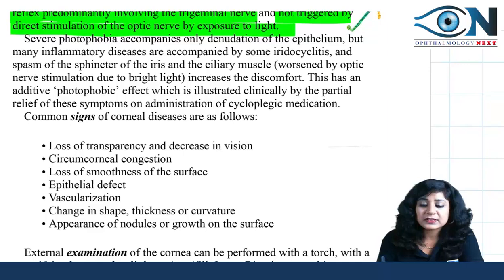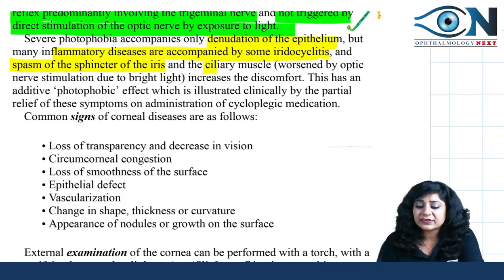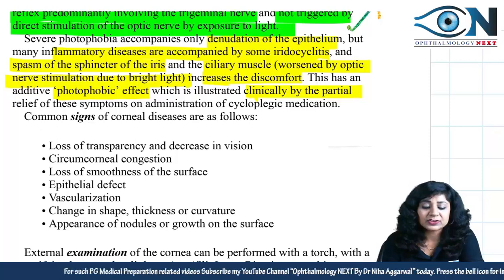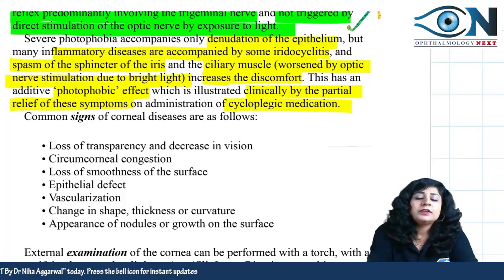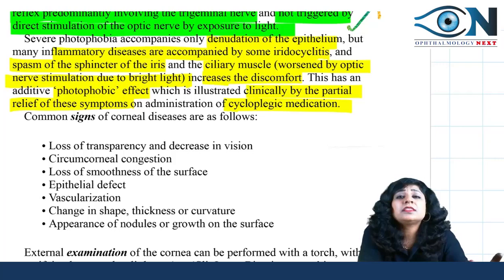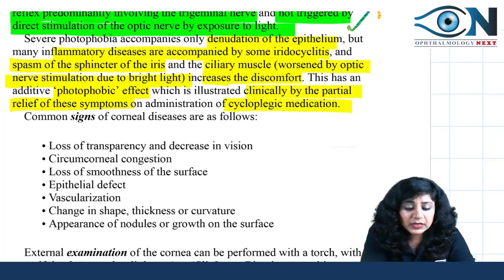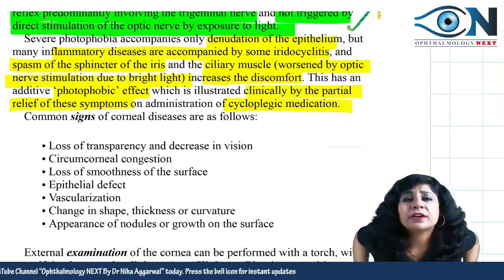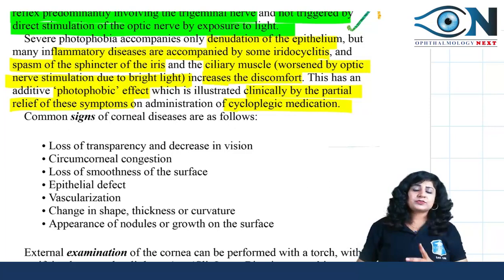Severe photophobia accompanies only denudation of the epithelium. However, many inflammatory diseases are also accompanied by iridocyclitis and spasm of the sphincter and ciliary muscle, which worsen the discomfort when the optic nerve is stimulated by bright light. This additive photophobic effect is illustrated by partial relief of symptoms when cycloplegic medications are given, as seen in anterior uveitis.